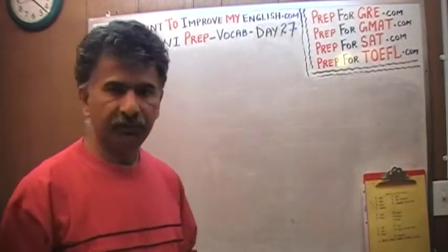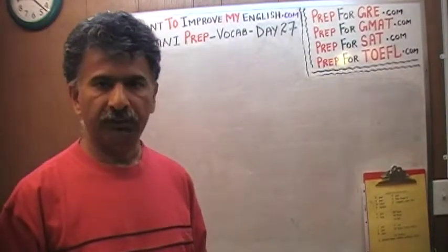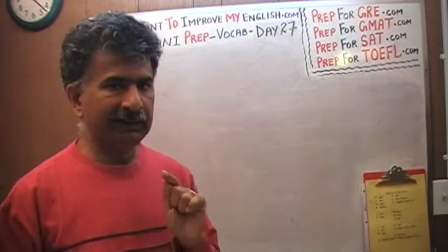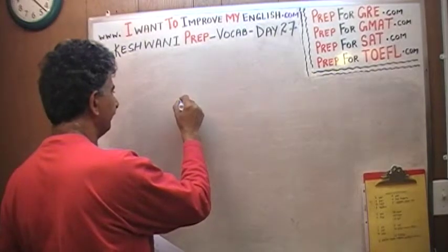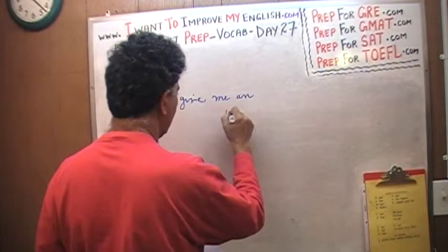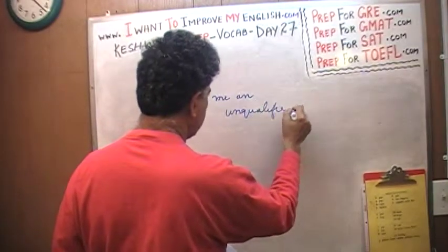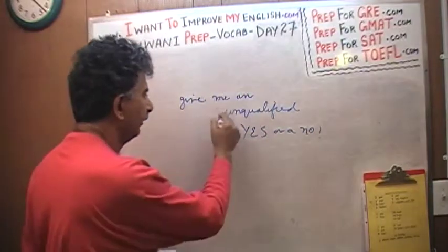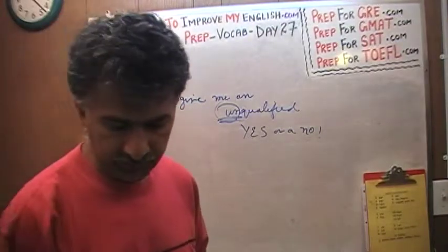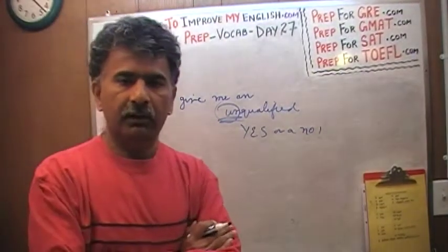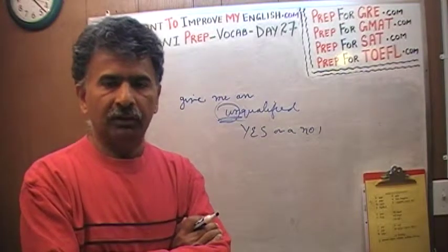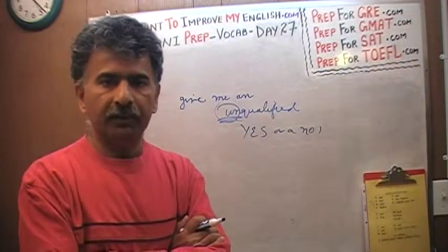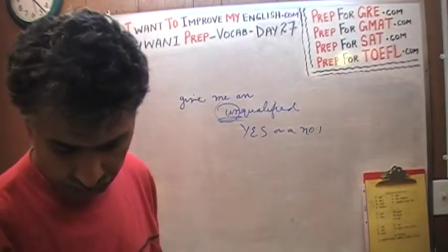For example, if you ask a child, 'Did you finish the homework?' and he says, 'Yes, I finished it, but...' — as soon as you hear the 'but,' you might say, 'I'm not looking for a but. Give me an unqualified yes or no.' An unqualified yes or no means: give me an answer without any conditions, without any restrictions, without any limitations. No ifs or buts or strings attached — just a simple yes or no.